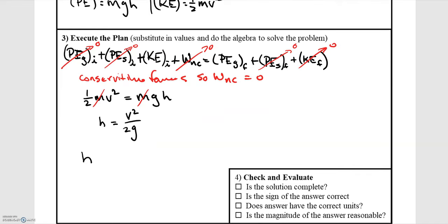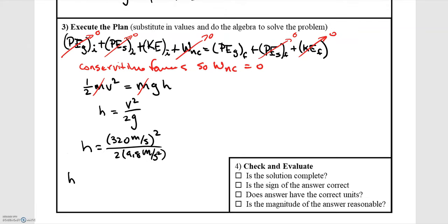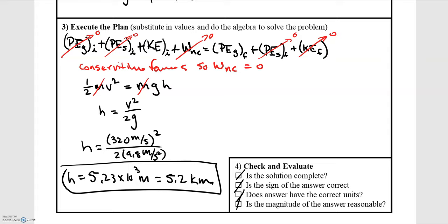Now we just substitute in. h is equal to v squared, which is 320 meters per second quantity squared, over 2 times 9.8 meters per second squared. Plugging that into your calculator, you find h is equal to 5.23 times 10 to the 3rd meters, or in terms of kilometers, just 5.2 kilometers. That matches up with the sign that we were expecting and the units, and the magnitude is what we were given of 5.2 kilometers. So we're good.